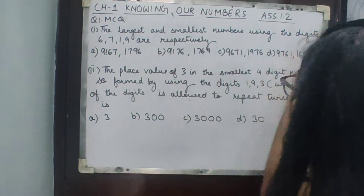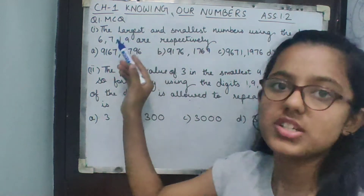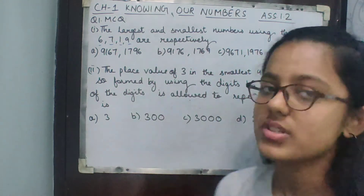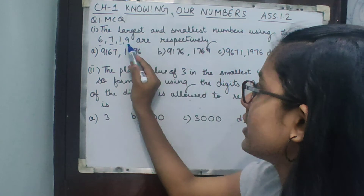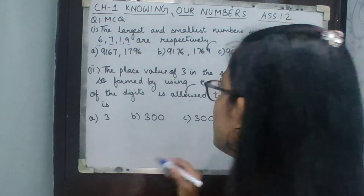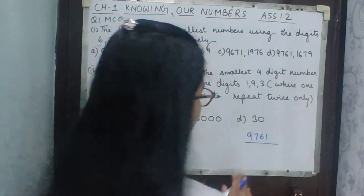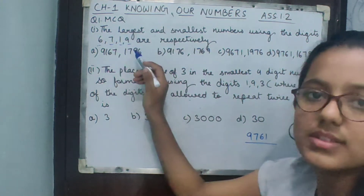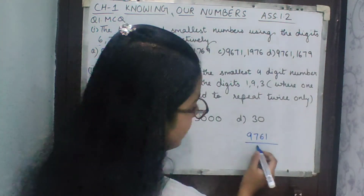Let's start with question number one, MCQ. The first one: the largest and smallest numbers using the digits 6, 7, 1, and 9 are respectively. We have to form the largest number and the smallest number. For the largest number, we start with the largest digit: 9, then 7, then 6, then 1 — so our largest number is 9761.